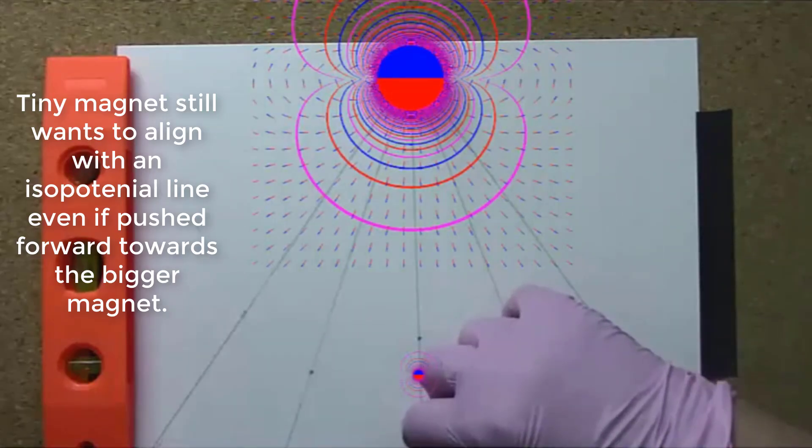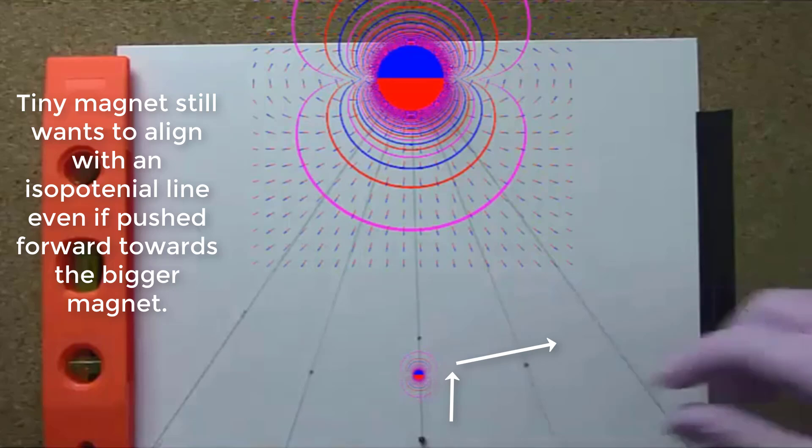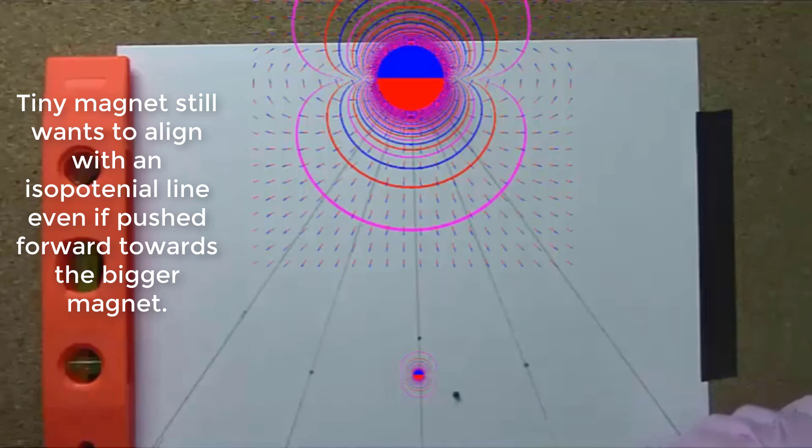Tiny magnet still wants to align with an isopotential line even if pushed forward towards the bigger magnet.